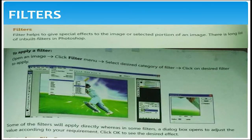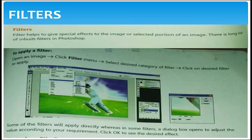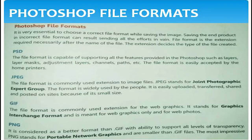Next topic is filters. Filters can help give a special effect to an image or selected portion of an image. There is a long list of inbuilt filters in Photoshop. To apply, click on the filter menu, select the desired category of filter, and click the desired filter to apply — it will give a special effect to the object.